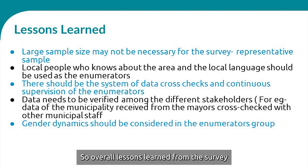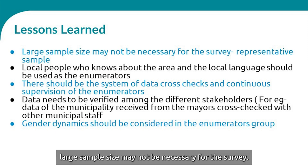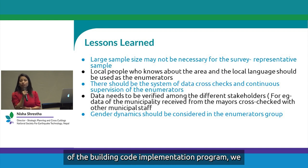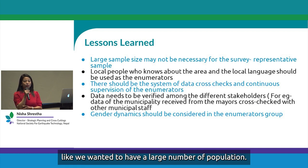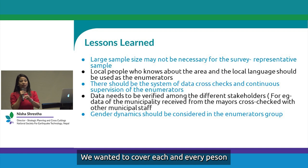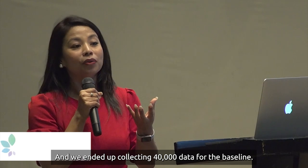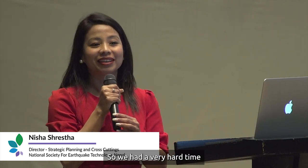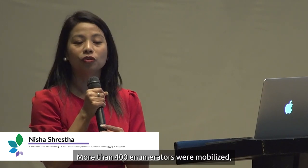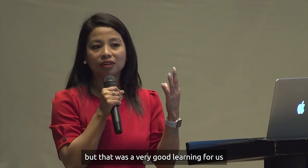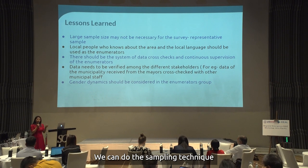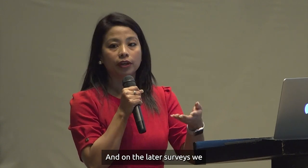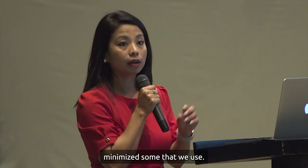Overall lessons learned: large sample size may not be necessary. During the initial phase of the building code implementation program, we wanted to cover every person for a representative sample and ended up collecting 40,000 data points for the baseline with more than 400 enumerators mobilized. That was very difficult for analyzing and collecting data. A good learning was that proper sampling techniques can give a representative sample, and on later surveys we reduced our sample size.